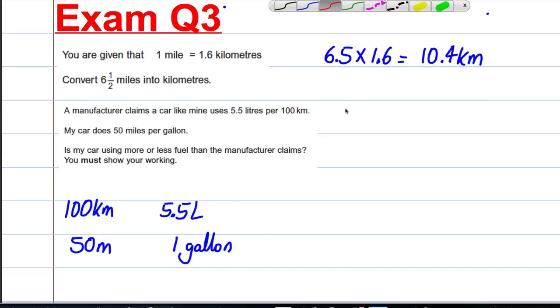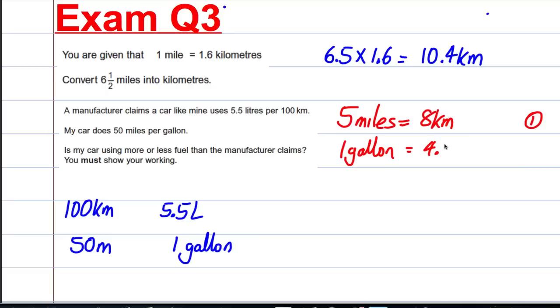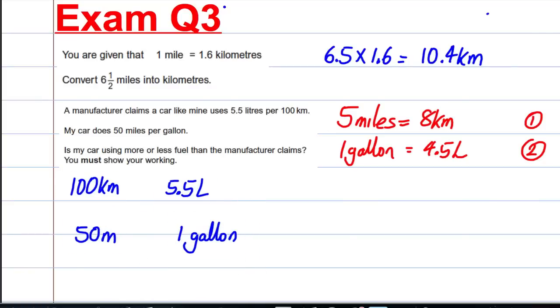The unit of measurement we need to know, we need to know two things. The first thing we need to know is that 5 miles is 8 kilometres. You get a mark for stating that conversion. And also, you need to know that 1 gallon is equal to 4.5 litres. And you get another mark for stating that. So let's convert these to the same unit. I'm going to keep this one. I like the look of this one. 100 kilometres per 5.5 litres.